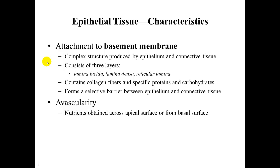The basement membrane is a complex structure produced by both the epithelial and the connective tissue. It has three layers: the lamina lucida, the lamina densa, and the reticular lamina. It contains collagen fibers and specific proteins and carbohydrates, forming a selective barrier between the epithelial and the connective tissue. The epithelial is avascular, so nutrients are obtained across the apical surface or from the basal surface.